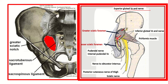Some other structures also pass through the greater sciatic foramen. These include the pudendal nerve and internal pudendal vessels, which pass through the greater sciatic foramen and then through the lesser sciatic foramen. Two other nerves are also present: the sciatic nerve and the posterior cutaneous nerve of the thigh.